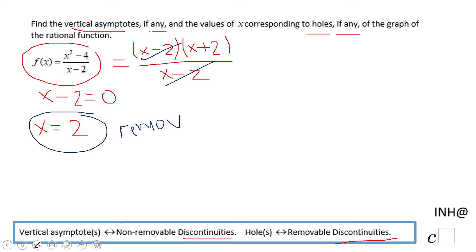Which tells us if it's removable, it tells us we have a hole. So we expect on the graph to have a hole.